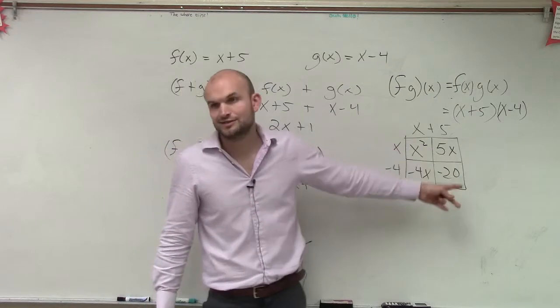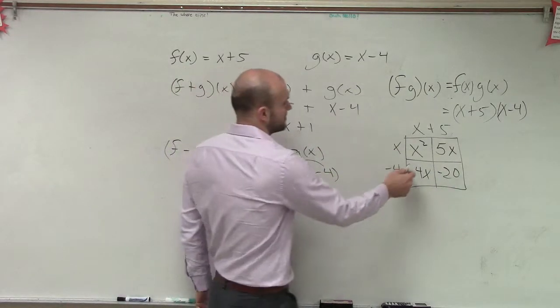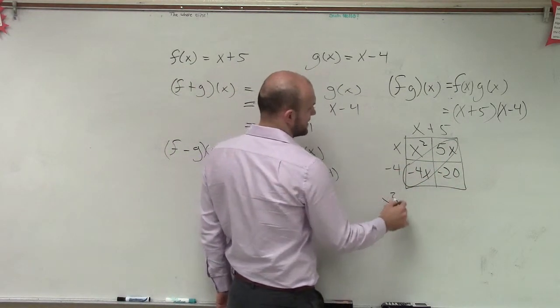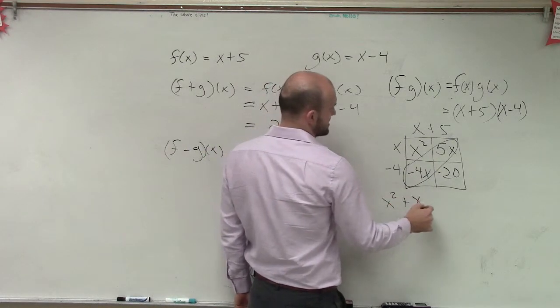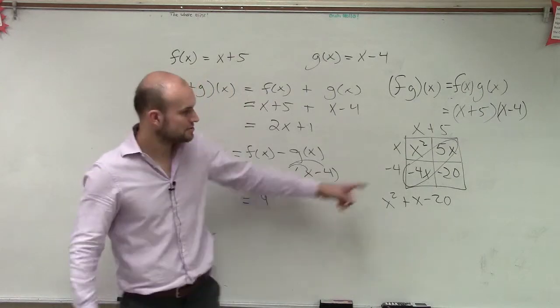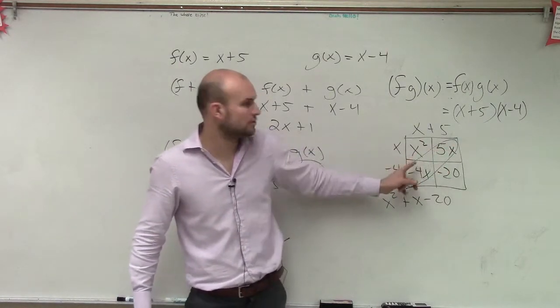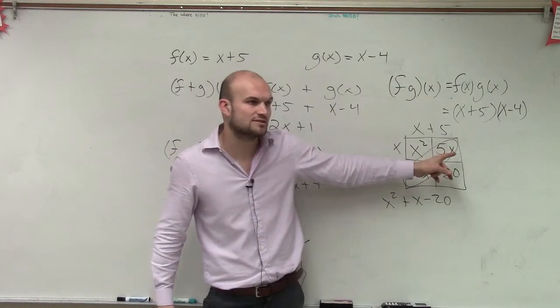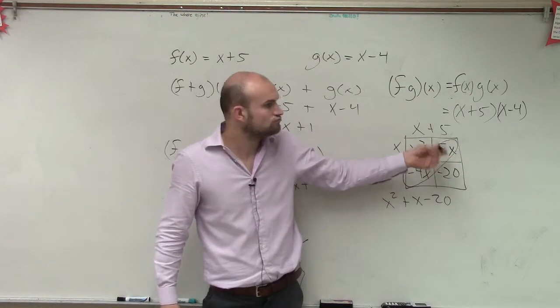Well, these are not like terms, so I can't add them all up. But I can combine those two. So there my final answer is x squared plus x minus 20. Why is it always those two? Because those are the only two that have the same variable. Those are the only two that have the same variable factors.